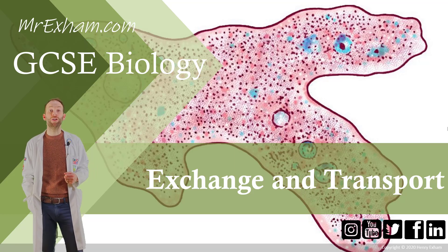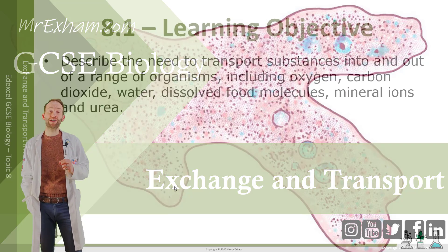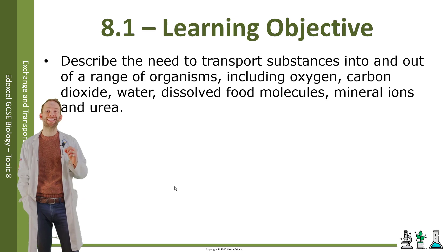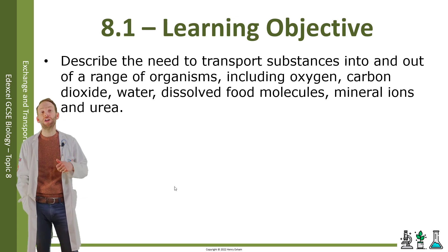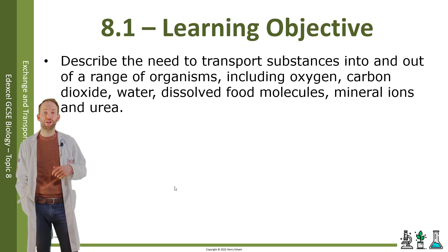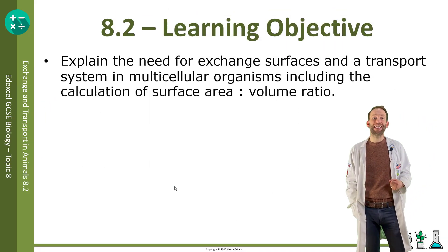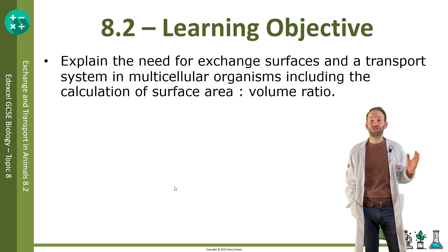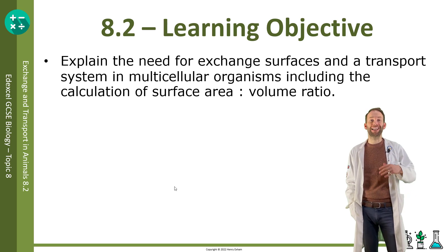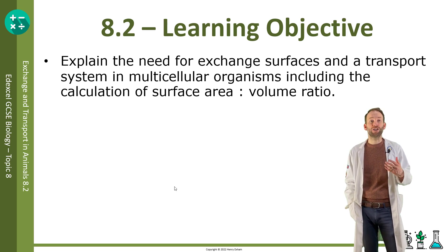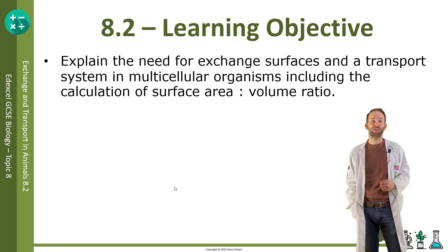Objective 8.1: Describe the need to transport substances into and out of a range of organisms including oxygen, carbon dioxide, water, dissolved food molecules, mineral ions and urea. Objective 8.2: Explain the need for exchange surfaces and a transport system in multicellular organisms, including the calculation of surface area to volume ratio.